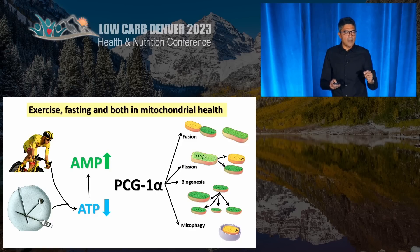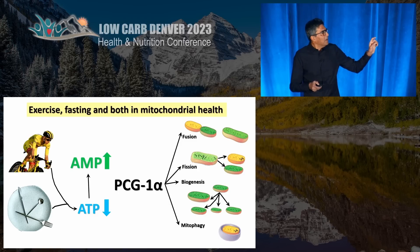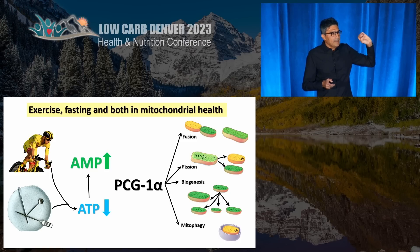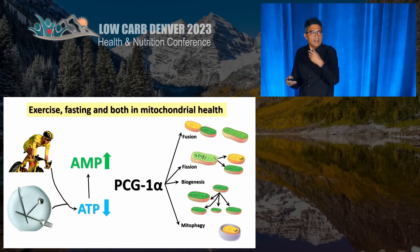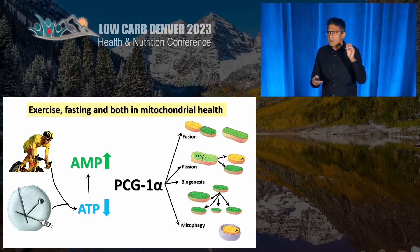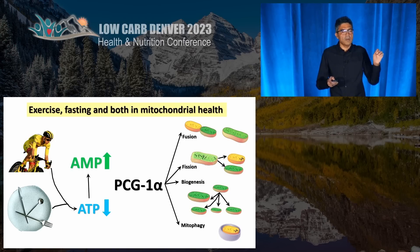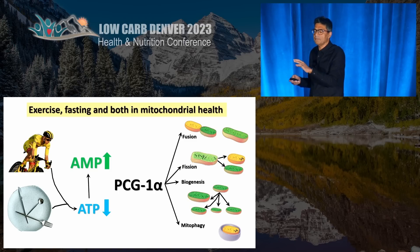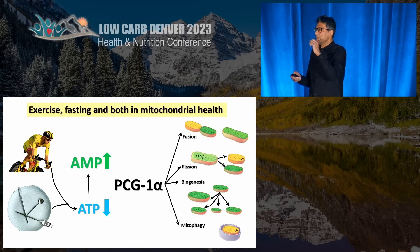In the setting of exercise, the body uses up ATP as energy fuel and AMP goes up. As ATP goes down and AMP goes up, this gives a strong signal to the cell to start producing the master mitochondrial biogenesis factor called PGC1-alpha. You don't need to remember that name, but it initiates mitophagy, it also initiates fusion and fission, and creates more mitochondria.